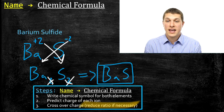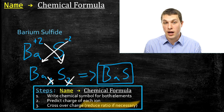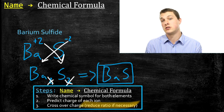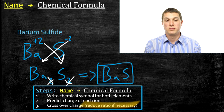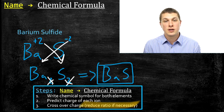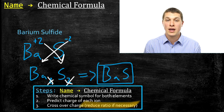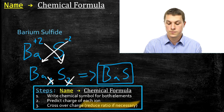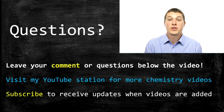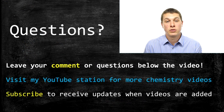What we haven't discussed are elements in the D block — the middle of the periodic table. For those elements, you can't predict their charges based on position, so there are slightly different rules for naming their compounds. That's the subject of my next video on naming ionic compounds. Thanks for watching Real Chemistry — please ask any questions below, or subscribe to receive updates about new videos.